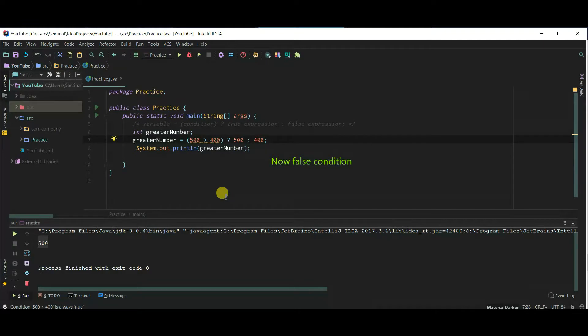Let's check false condition. 10 is not greater than 400. Therefore, 400 is printed.